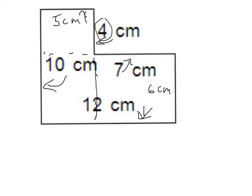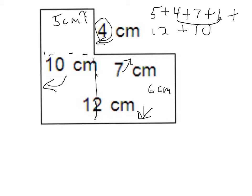Now I'm ready to find the perimeter. I have 5 plus 4 plus 7 plus 6 plus 12 plus 10. I'll combine some numbers: 10 plus 10 is 20, 7 plus 5 is 12, 12 plus 12 is 24, and 24 plus 20 is 44. So my perimeter is 44 centimeters.